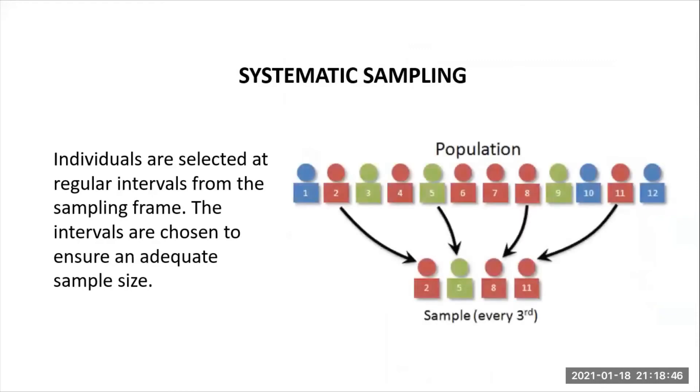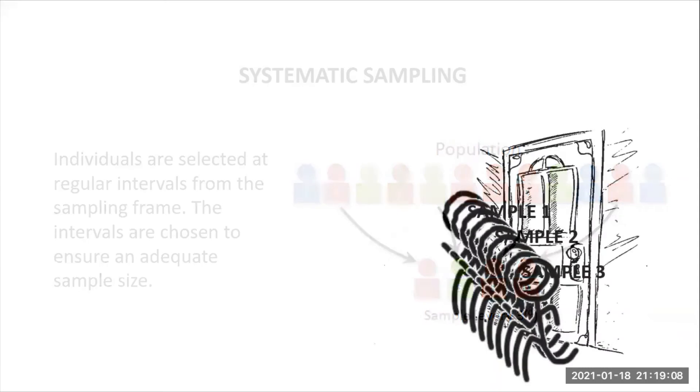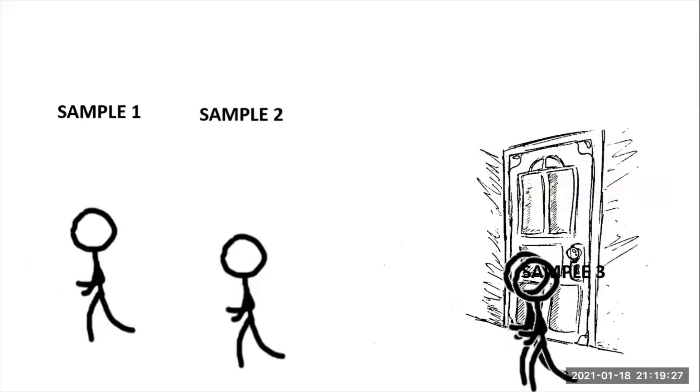For systematic sampling, individuals are selected at regular intervals from the sampling frame. The intervals are chosen to ensure an adequate sample size. If you need a sample size of n from a population of size x, you select every nth individual. For example, if you wanted a sample size of 4 from a population of 12, you would select every third member of the sampling frame. You may also use a public establishment to randomly select participants by your desired interval — for example, every third person that passes through the doorway. Systematic sampling is often more convenient than simple random sampling and is easier to administer.